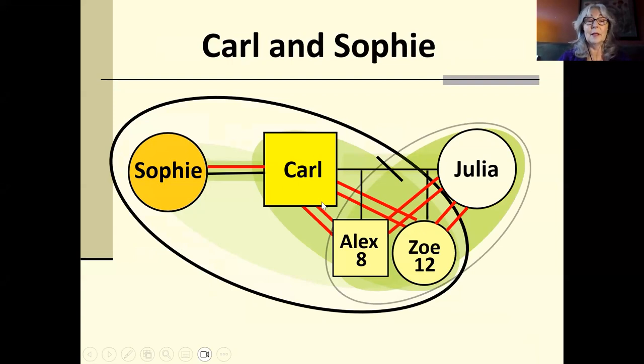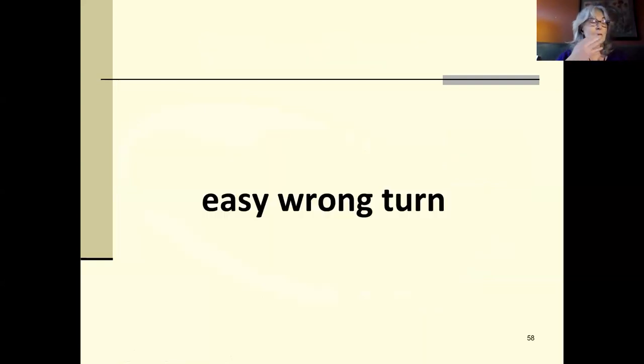Different kids in the same family will go at different paces. Alex is going to be more available to Sophie, more able to join in when the family's together. Zoe is, first of all, a girl, second of all, a 12-year-old girl, and third of all, very, very close to her mom. We're missing that slice here. Zoe's going to be slower. Zoe's going to need more one-to-one time and less family time. Alex is going to be a little more easy coming along.